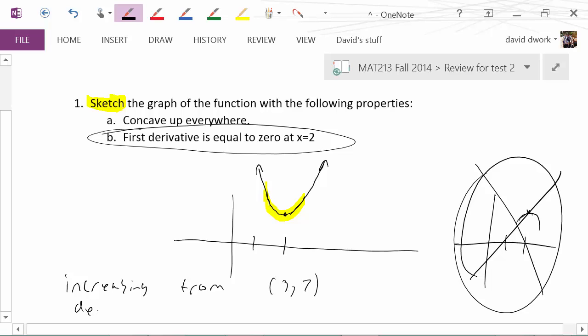But it was decreasing from 7 to 8. Okay, so then you got to start thinking about, alright, how would I draw that? If it was increasing, that means the graph is going up. If it's decreasing, that means the graph is going down.